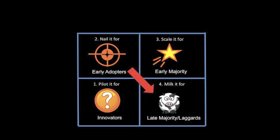The third strategic folly is called the lost opportunity. In this stage, a company pilots it for innovators and nails it for early adopters, but they're too late. Some other company has already established itself as the leader.